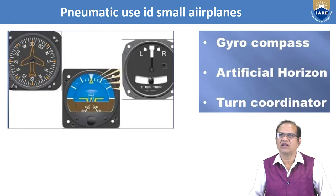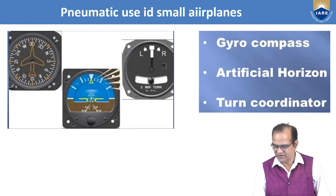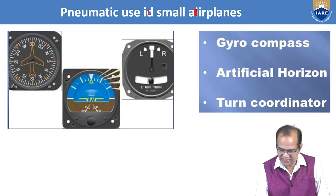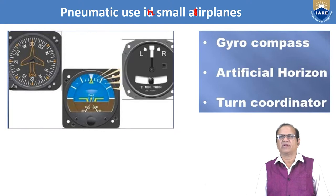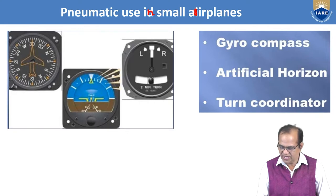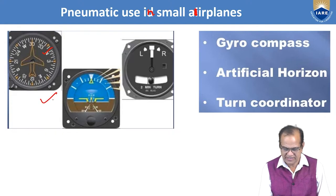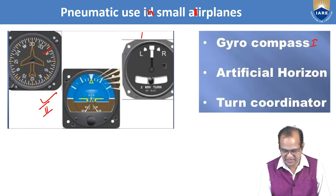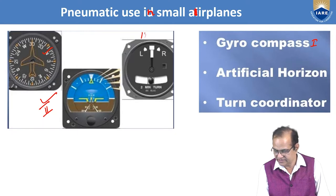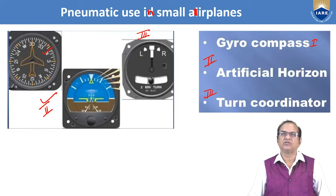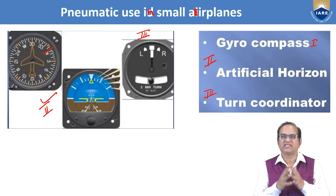Pneumatic use in small airplanes: in a small airplane there is typically one gyro compass, one artificial horizon, and a turn indicator. The gyro compass gives the direction of the aircraft — in which direction you want to go.